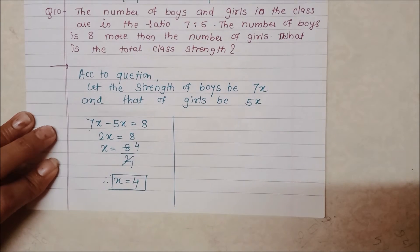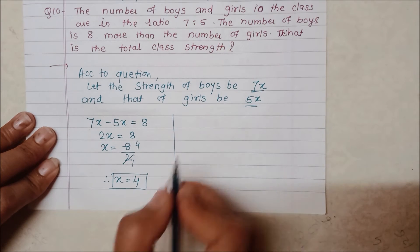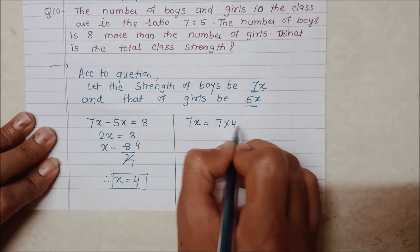Now, first we have to find the number of boys and girls. This is the ratio. Just put the value. 7x is equal to 7 into 4, that is 28 boys.